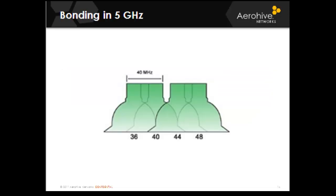Bonding in 5 GHz lets you use non-overlapping channels with 40 MHz wide channels. Using the four channels in UNII-1, you can bond channels 36 and 40 together and 44 and 48 together, allowing two APs in the same airspace using channel bonding. Adding the upper UNII band allows two more APs, for a total of four access points in the same area using channel bonding. In a high-density environment, you may elect not to bond channels in order to break up collision domains, co-locating eight access points instead of four.